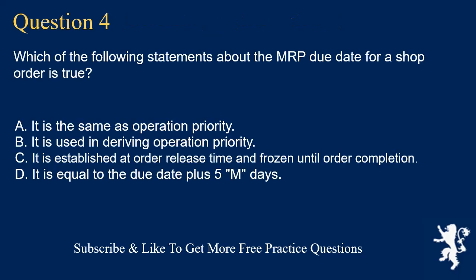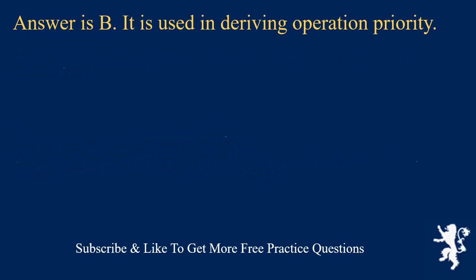Question 4. Which of the following statements about the MRP due date for a shop order is true? A. It is the same as operation priority. B. It is used in deriving operation priority. C. It is established at order release time and frozen until order completion. D. It is equal to the due date plus 5 M days. Answer is B. It is used in deriving operation priority.